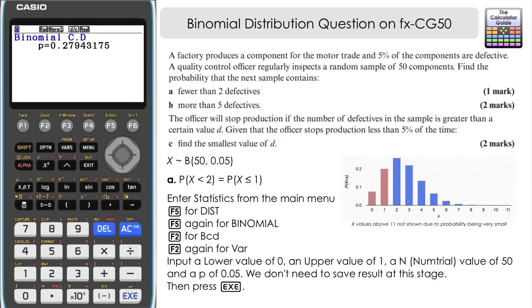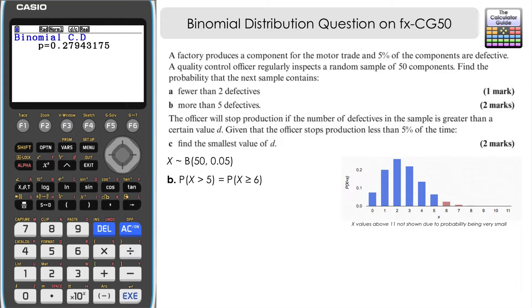Okay, so for part B, we need to find there being more than five defectives, more than five defectives. Essentially, what that means is we want six or more. So the probability of X being greater than or equal to six.